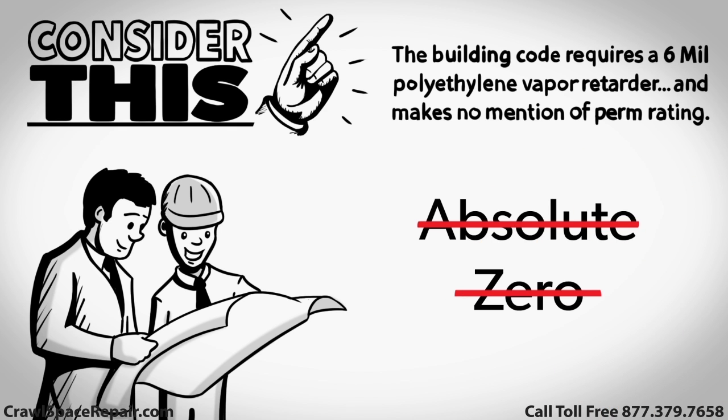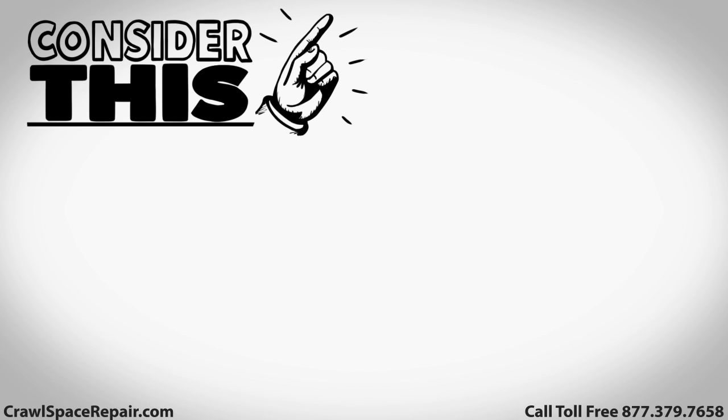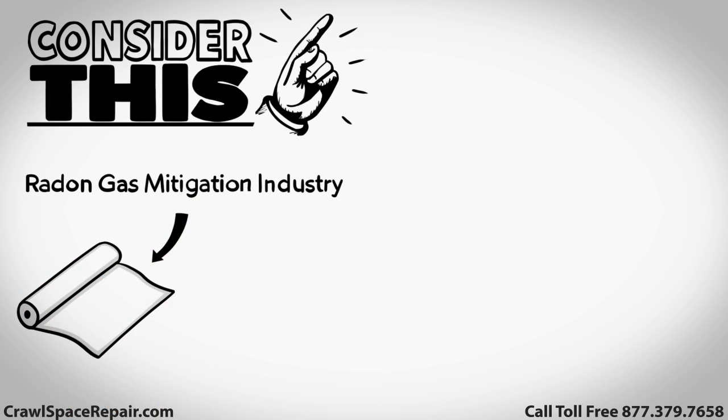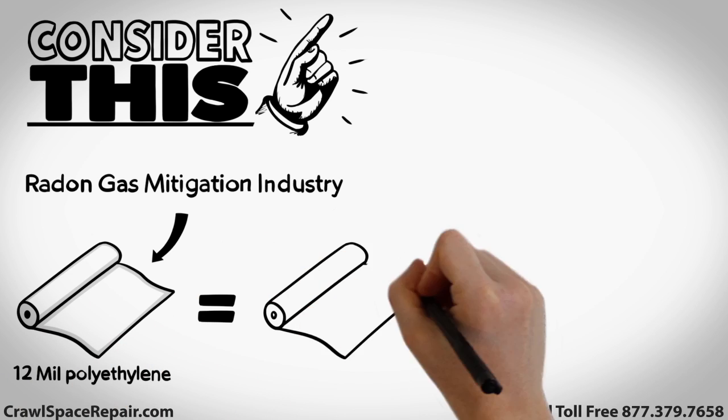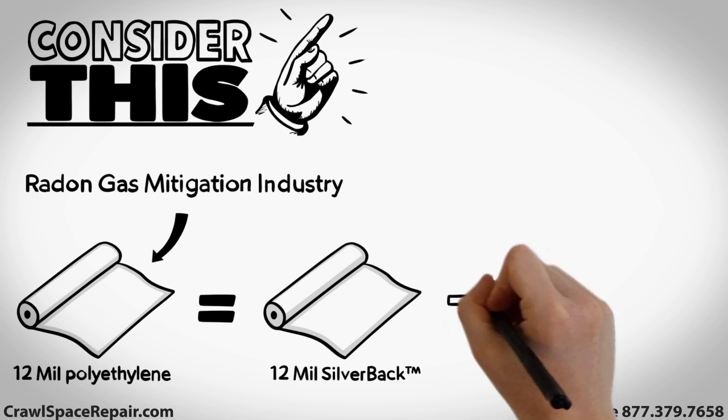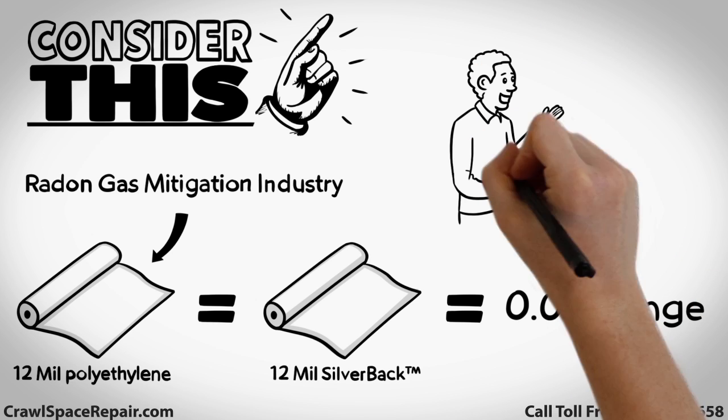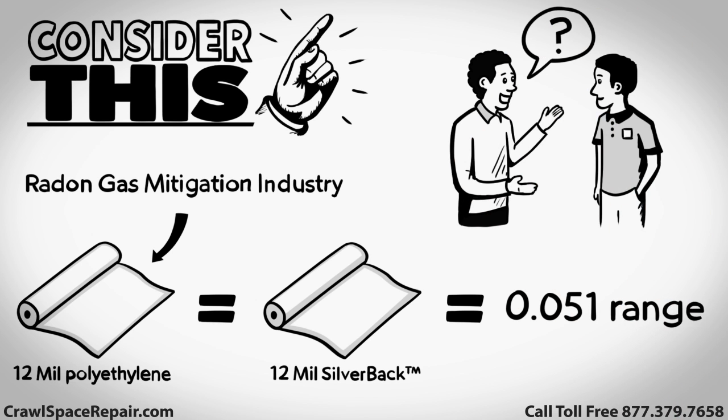Another consideration. Perms is a water vapor penetration rating and not a gas penetration rating. Many in the radon gas mitigation industry use a 12-mil polyethylene vapor barrier, similar to the 12-mil silverback, with a perm rating in the 0.051 range. So don't be shy, ask the salesman to support their claims.